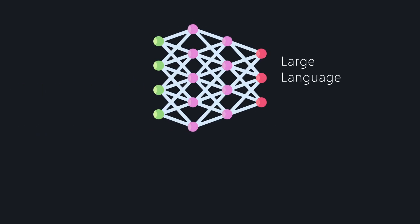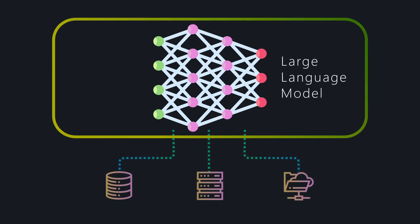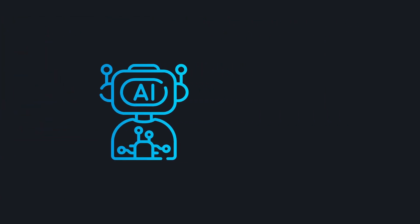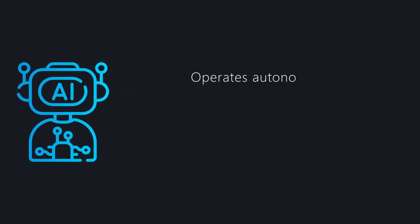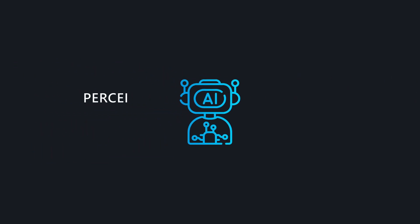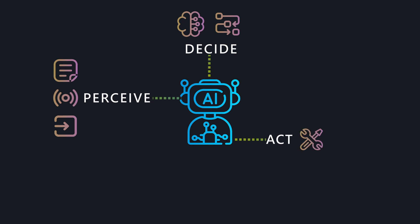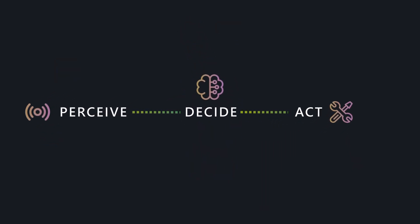By giving LLMs access to external systems and data, agents unlock a much wider range of real-world applications. In simple terms, an AI agent is a digital system that operates autonomously within an environment. It usually performs three core functions: perceive the environment by accessing data, sensors, or inputs; decide using an internal reasoning engine to plan actions toward a goal; and act by using tools to perform tasks in the real world.